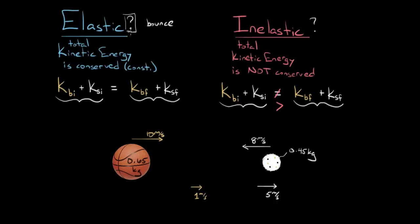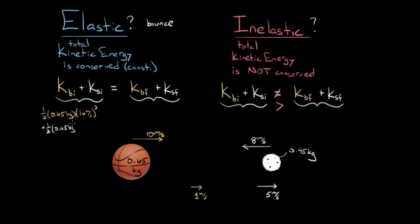What do we do to check whether it's elastic? We check whether the total kinetic energy was conserved or not. Using the formula for kinetic energy — ½mv² — the initial kinetic energy of the basketball is ½ × (mass of basketball) × 10², plus ½ × (mass of ice cream) × 8². We're squaring this, so the sign of the velocity doesn't matter. Adding all those up, we get 46.9 joules of total initial kinetic energy.